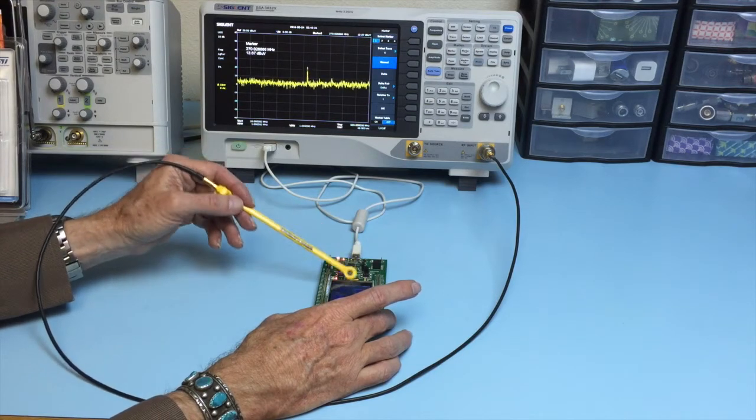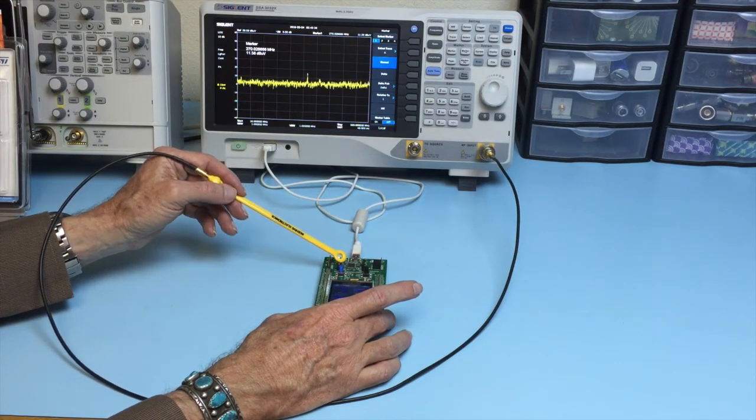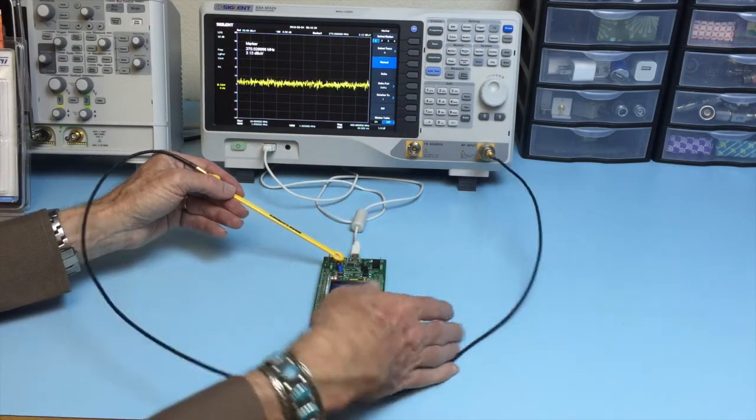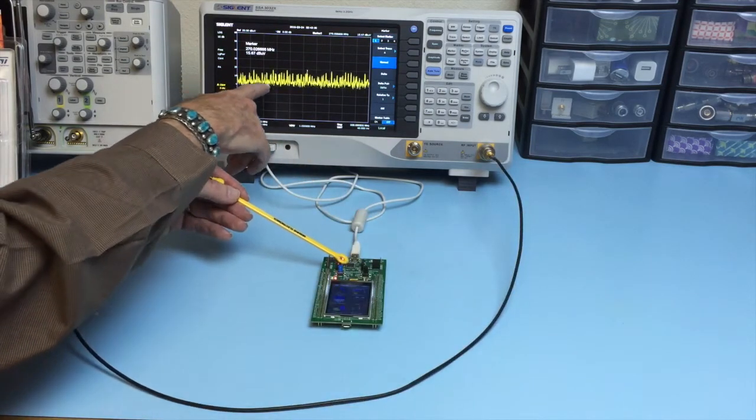Now there's two crystal oscillators, both 8 MHz, one here and one here. And so a lot of these harmonics are probably generated from the 8 MHz.